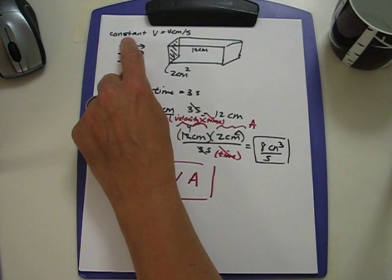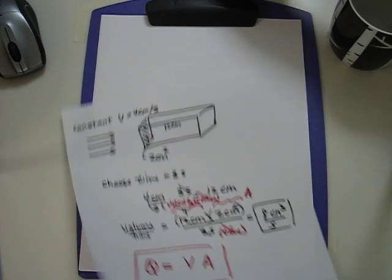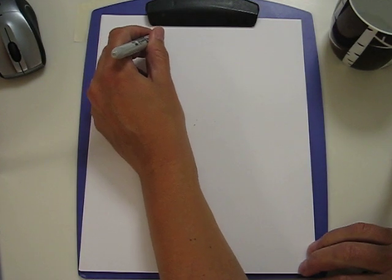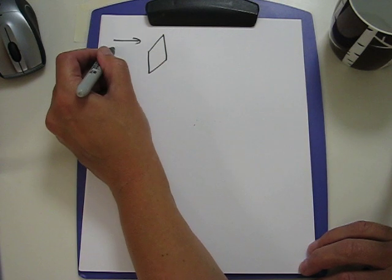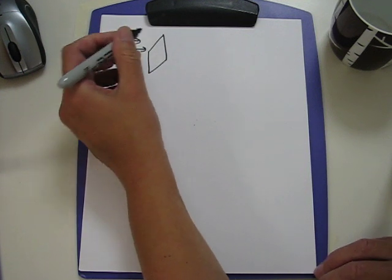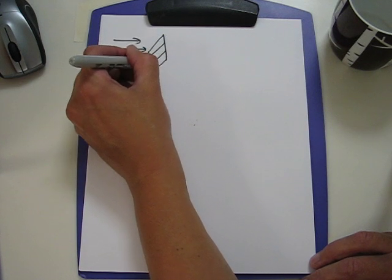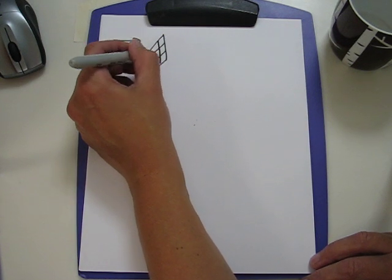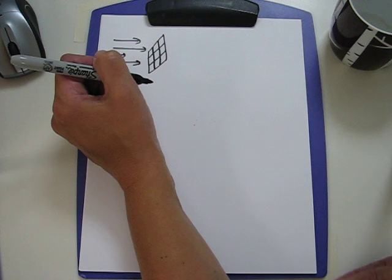This case of constant velocity is not always the case. We know for instance in our flow down an incline plane that the velocity varies with position, and we can adapt our situation to the case where the velocity varies. In order to take into account all these variations in velocity, we need to divide our cross-sectional area into little pieces over which the velocity is constant.